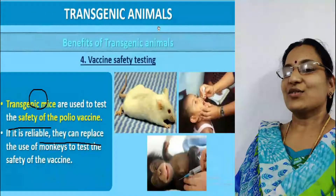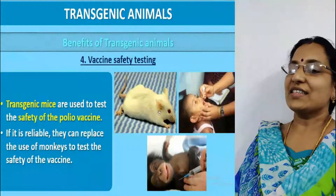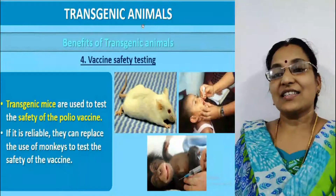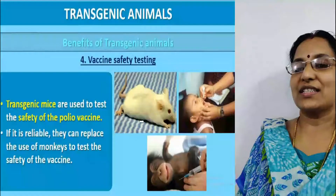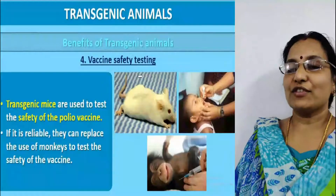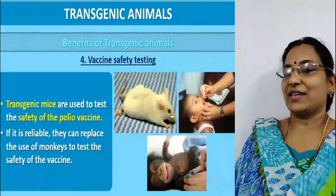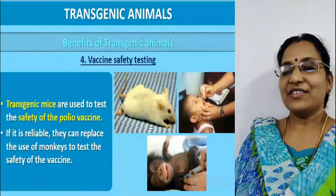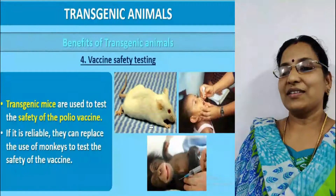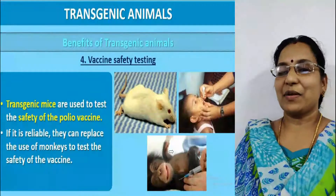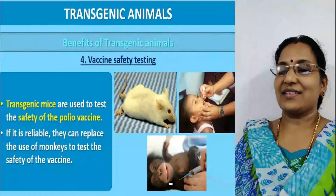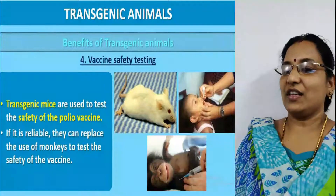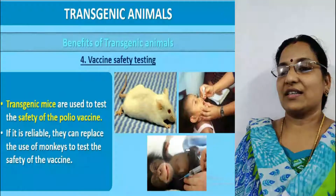The fourth benefit is vaccine safety testing. Transgenic mice are used to test the safety of the polio vaccine. If reliable, they can replace the use of monkeys to test vaccine safety.